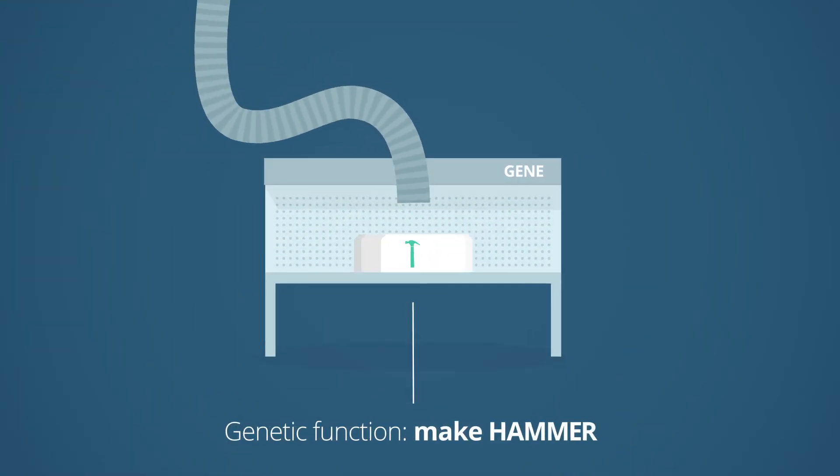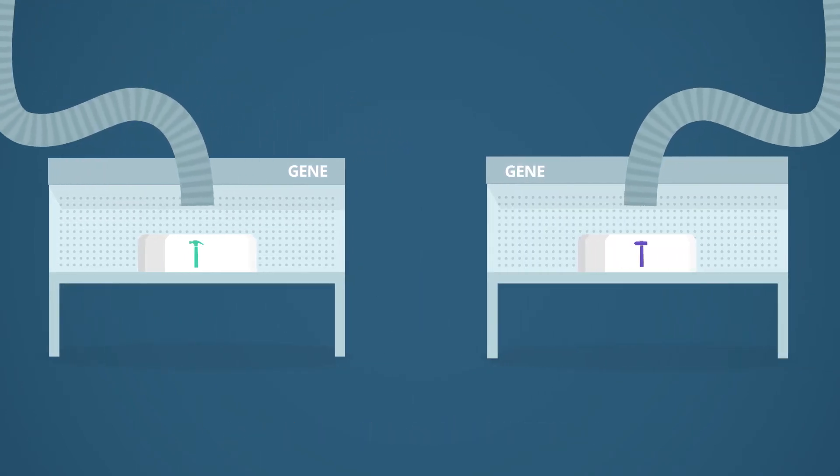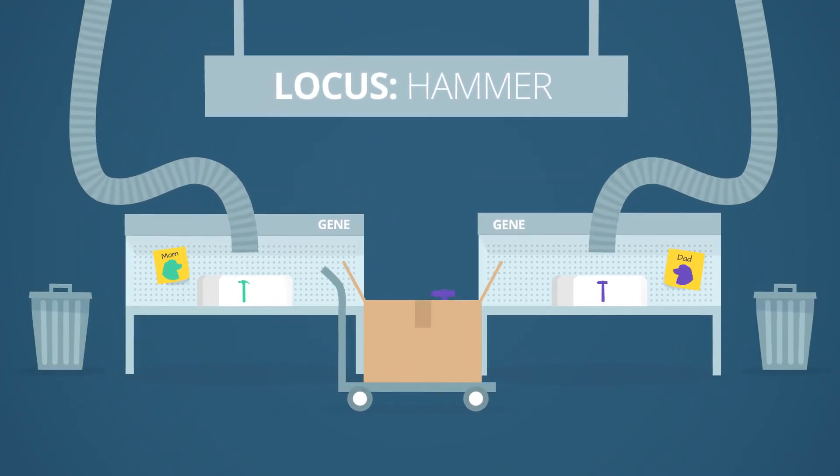A gene is like a mold for a genetic function. Per function, each dog receives two variants, one from the father and one from the mother. Together, they comprise a locus, the workshop for this function.